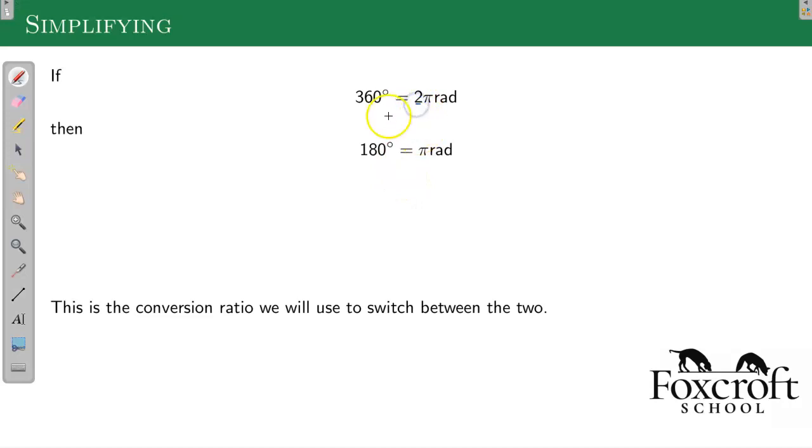You might notice we have this two here, so we can actually just divide both sides by two just to make the number smaller. Half of a circle is 180 degrees and half of a circle is pi radians. It doesn't make sense to go smaller than this, because then you'd have a fraction with the pi, and it's just easiest to keep it as a single pi. So this is going to be our conversion ratio: 180 degrees equals pi radians.